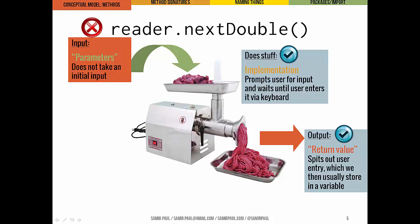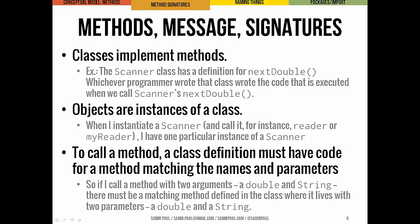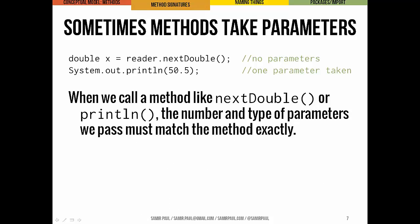A key idea here: a particular class implements a particular method. For a particular class, we can have a definition of a method. In the Scanner class, whoever was writing it over at Oracle wrote a definition of what the nextDouble method does and how it does it. Then we create an instance of a class — an object. When I instantiate a Scanner object, I have one particular scanner, and then I can call a method from that particular instance. Sometimes methods take parameters, not always. The nextDouble method takes no parameters. System.out.println here takes one parameter — 50.5.